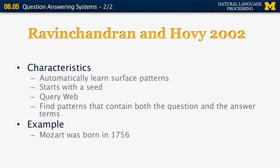Here's one more example: 'Mozart was born in 1756.' The kind of pattern the system recognizes is that 'was born in' is an example that links together the name of a person and his or her birth date.